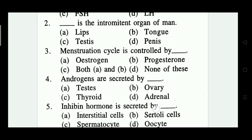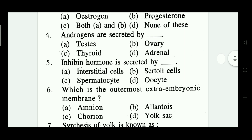Question five: inhibin hormone is secreted by which cells? Options: intestinal cells, Sertoli cells, spermatocyte cells, and oocyte. Which one is correct? It is option B — Sertoli cells is correct.